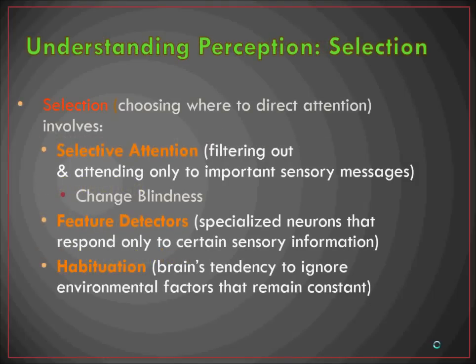Regarding selection, this is essentially choosing where to direct your attention. You're having all this sensory information coming in and your brain needs to understand where and what to pay attention to. In a busy room, you're going to have furniture, a lamp, another person nearby, a TV on — a lot of sensory information to see, hear, smell, and touch. So your brain has to be able to select what it's paying attention to. One of the ways it does so is through selective attention — filtering out and attending only to important sensory images.